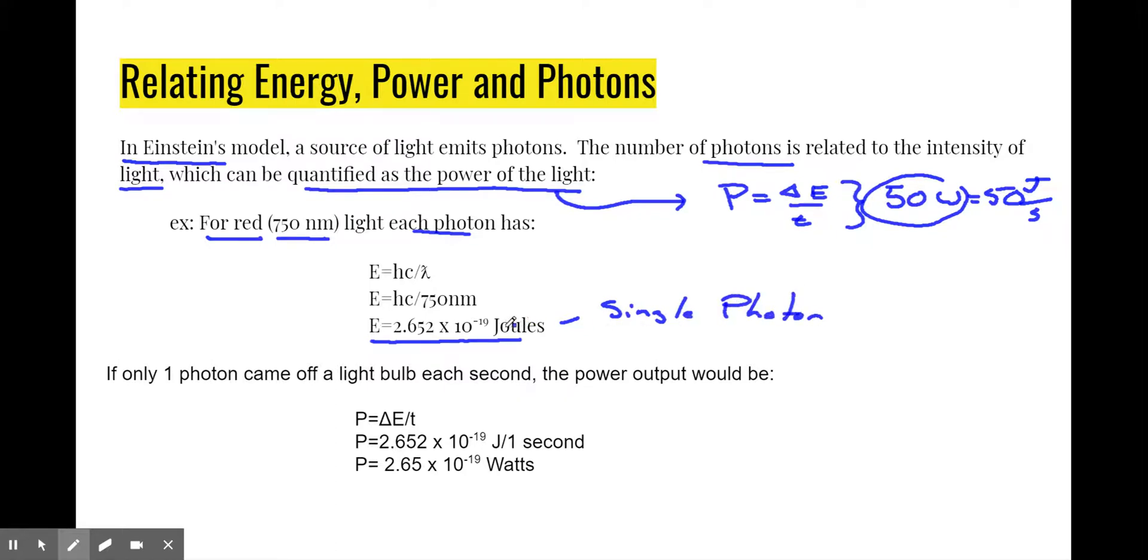When we are faced with the challenge of converting or relating that to power, consider what that would mean if only one photon came off a light bulb each second. The power output would be power is change in energy over time. So, we have a measly 2.652 times 10 to the minus 19 joules each second. That would only provide us with 2.65 times 10 to the minus 19 joules, much less than your typical household light bulb. But, this is a very dim light bulb that is only giving off one photon each second.